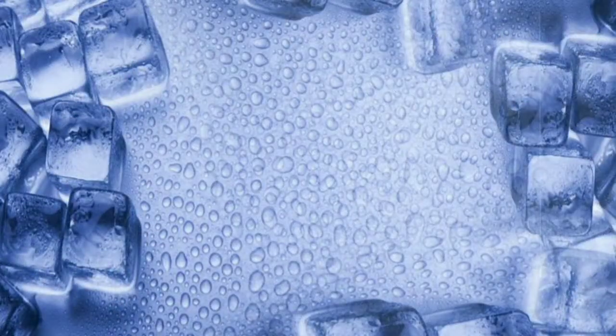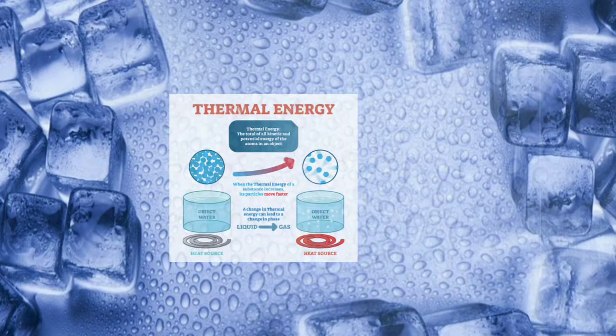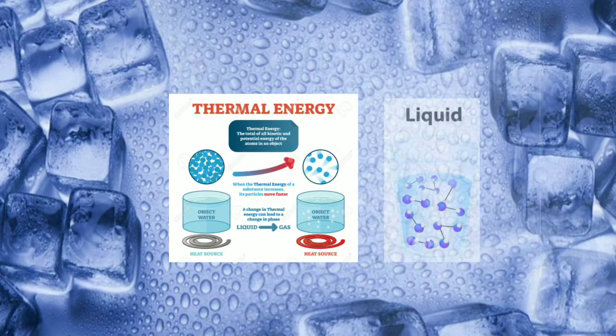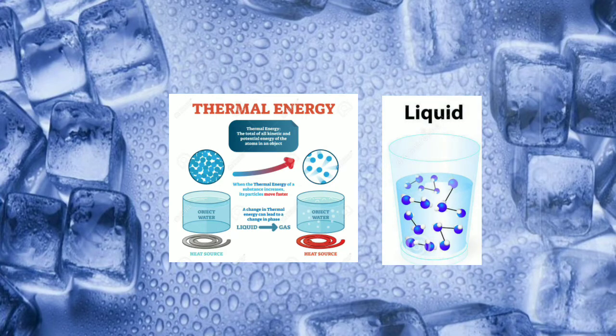Water drops appear around a cold water glass because the molecules of water vapor present in the air come in contact with the glass containing the cold water. It begins to release some amount of thermal energy. Due to this, the vapors get converted to liquid state and appear in the form of water droplets.